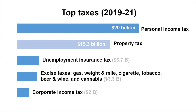One thing you do not see on this slide is a general sales tax. Oregon famously is one of the few states that does not levy a general sales tax, and Oregonians have rejected efforts to establish one at the ballot box nine times. But while we don't have a general sales tax, we do have excise taxes — essentially sales taxes on specific types of goods. The seven most important excise taxes in Oregon include the gas tax, the weight-and-mile tax for trucks, cigarette, tobacco, beer and wine, and most recently the cannabis tax. Lumped together, they would make up the fourth largest source of revenue for the state.